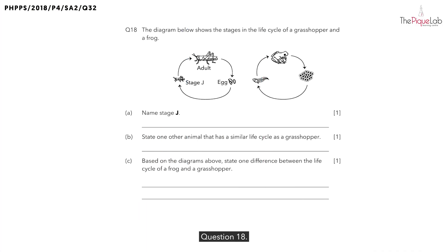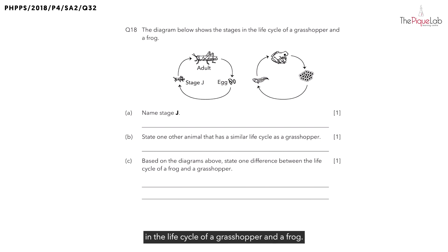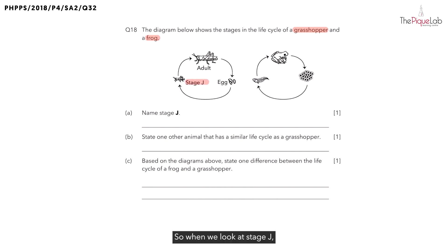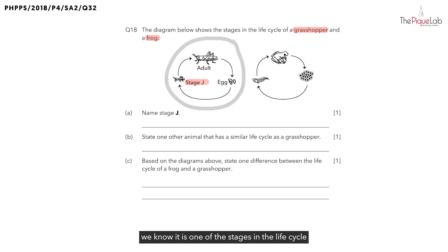Question 18. The diagram below shows the stages in the life cycle of a grasshopper and a frog. In part A, they want us to name what stage J is. When we look at stage J, we know it is one of the stages in the life cycle of the grasshopper.